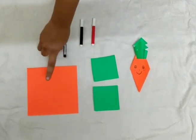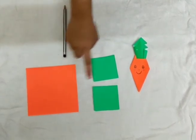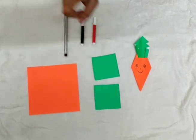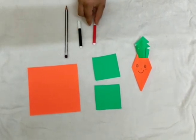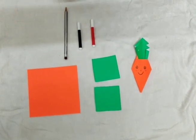And for this we need one orange origami sheet and two small green sheets. One pencil to make face, one black sketch color and one red sketch color. So let's begin.